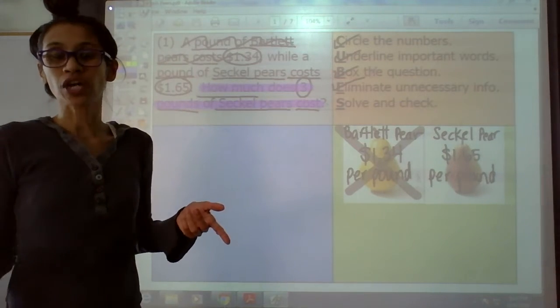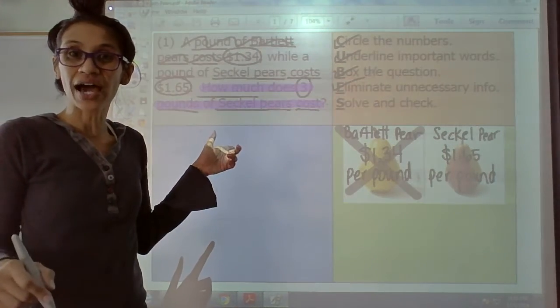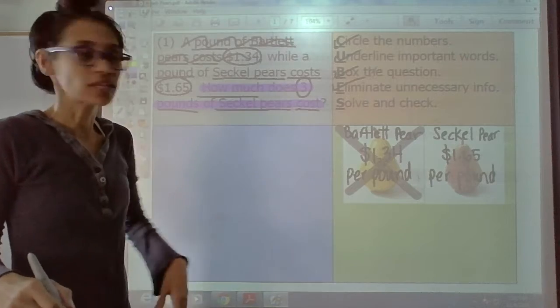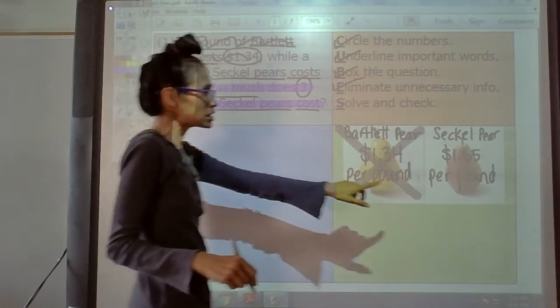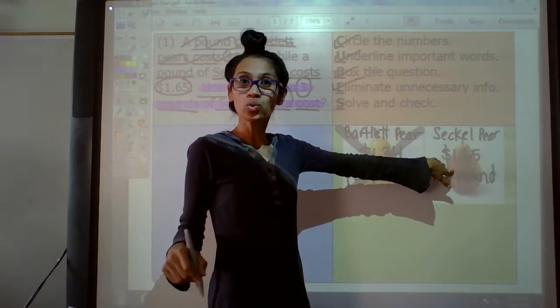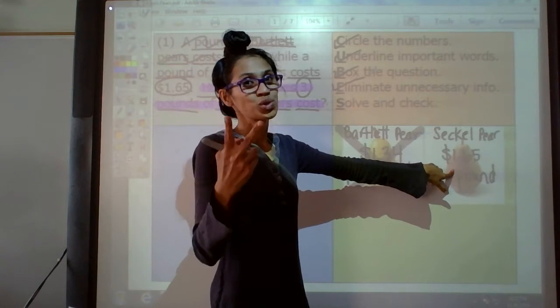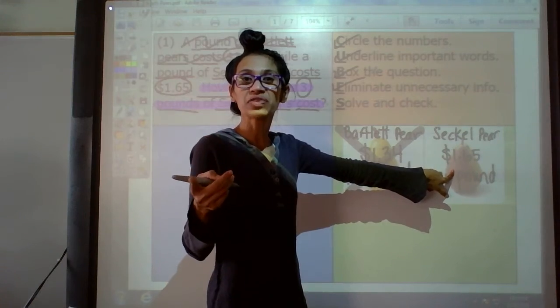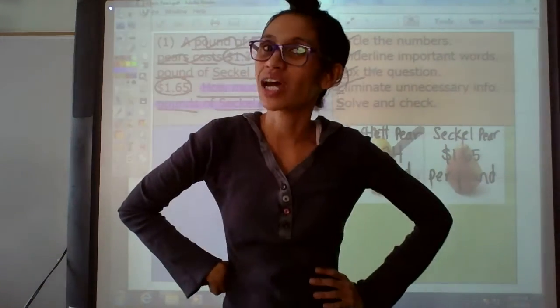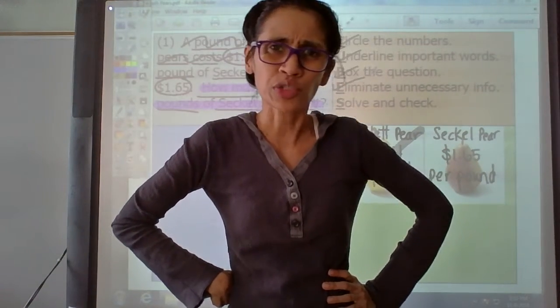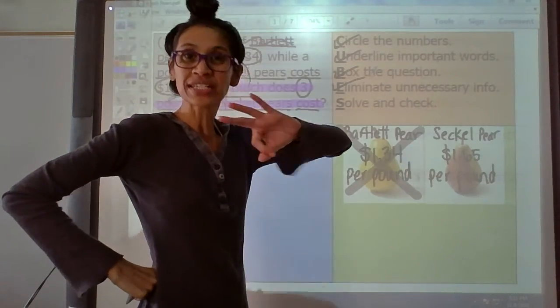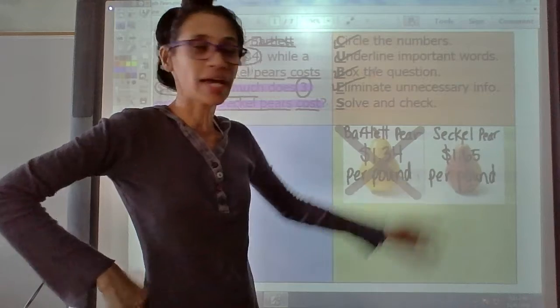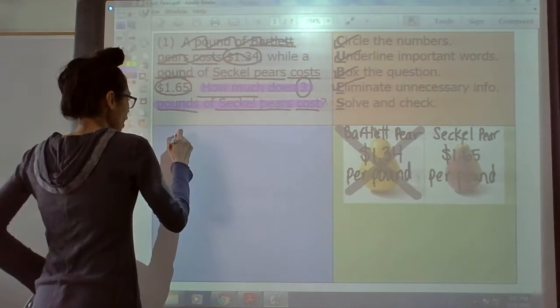The last part is to solve and check. Well, we kind of started doing that by eliminating the information. So to figure out how much three pounds of these costs, what do we need to do? Two ways. Now, you can show one way. But I think it's better if you show two ways. Because I know you can do both ways. Because you're so smart. We can either add that three times or multiply it by three. So let's look at how we can do that.